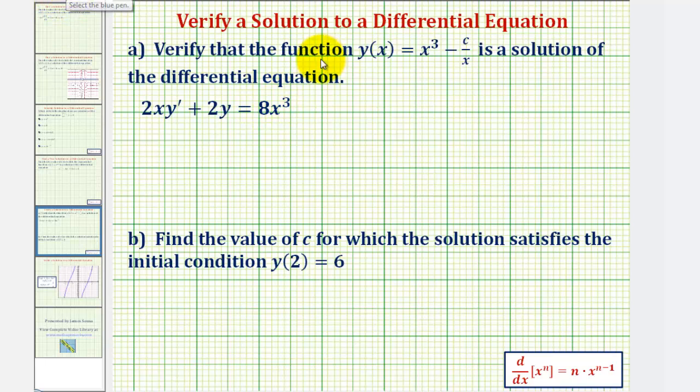Let's begin by changing the form of y of x. Let's write y of x as y of x equals x cubed. And for c divided by x to the first, we'll move x to the first up to the numerator, which will change the sign of the exponent. So we can write the second term as minus c, x to the power of negative one.